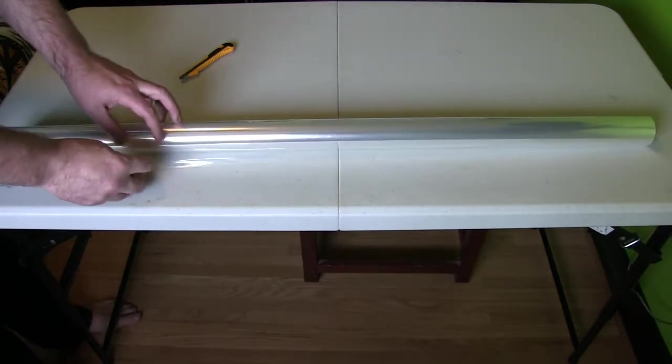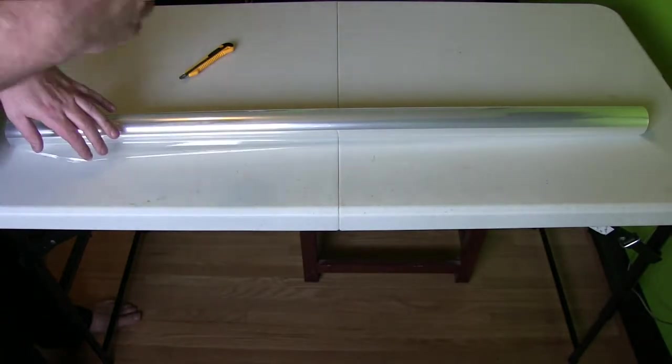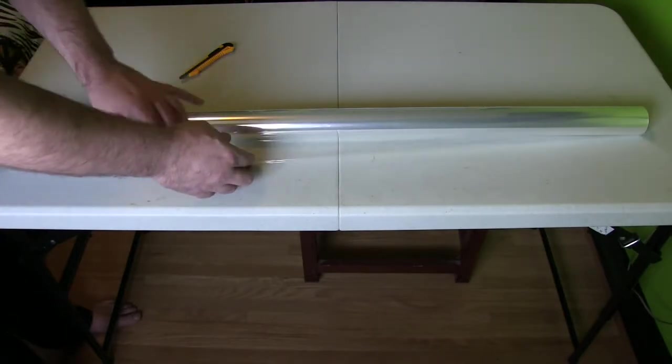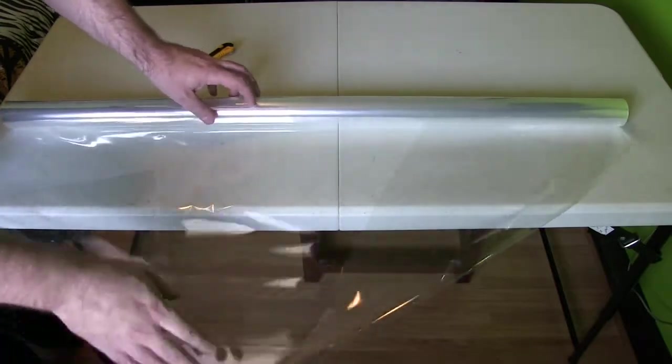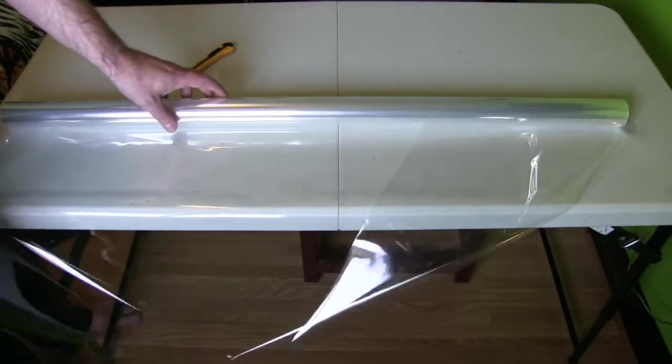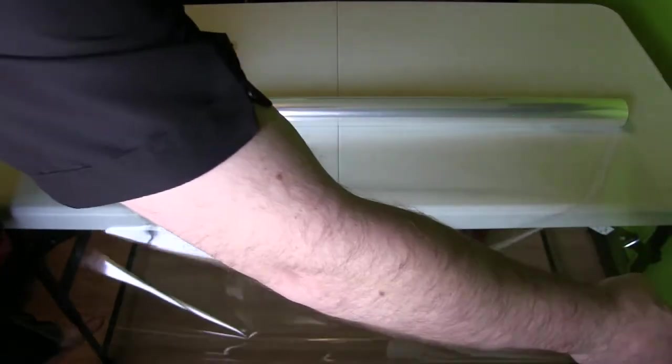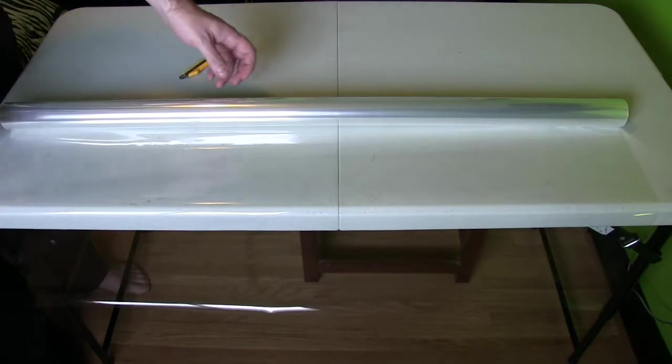While we roll that out, a few things to keep in mind. We want to try to keep it as dust free as possible, so make sure you're keeping your work surface clean. We also want to make sure that we don't scratch it, and probably most importantly make sure you don't wrinkle it as it unrolls. A wrinkle in the cellophane can actually create what looks like a hot spot in your blade.